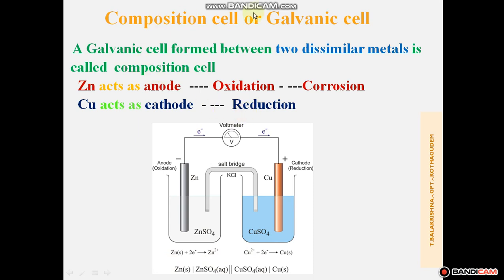This is a Composition Cell, formed between two dissimilar metals. In this Galvanic Cell construction, the two dissimilar metals are Zinc and Copper. These two metals are dipped in different electrolytic solutions — Zinc is dipped in Zinc Sulphate solution and Copper is dipped in Copper Sulphate solution. These two metals are connected and exposed to their respective electrolytes.